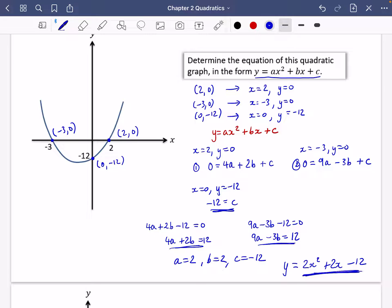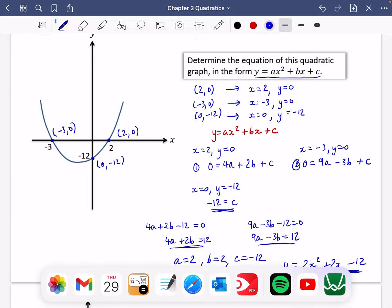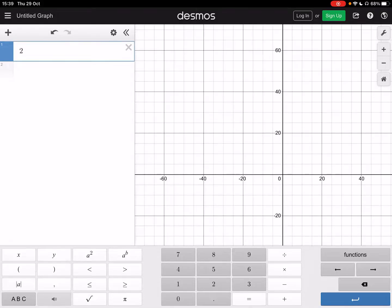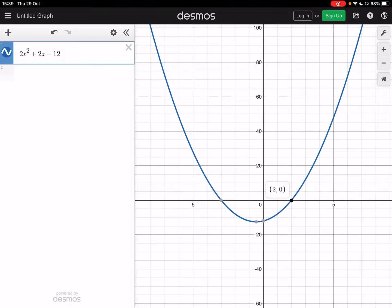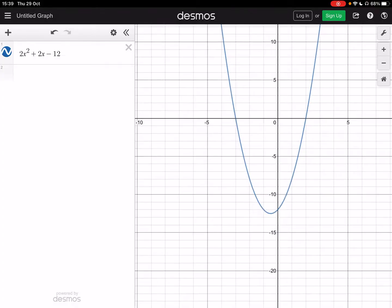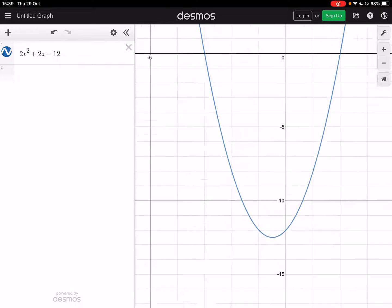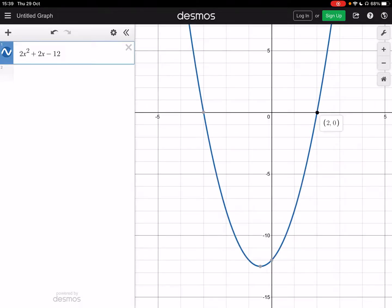So the quadratic is going to be 2x squared plus 2x minus 12. Now there are many other ways of doing this. This is just the way that I would recommend because I think it will be quickest. Let's just double check that's right on Desmos. So that's 2x squared plus 2x minus 12. So we said we wanted it to be crossing at 2 and minus 3. So we have got the right ones. We've got 2, minus 3 and minus 12.